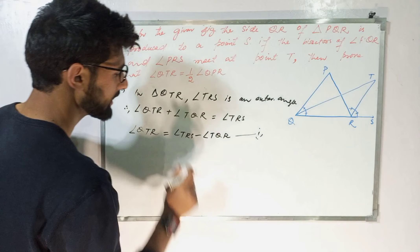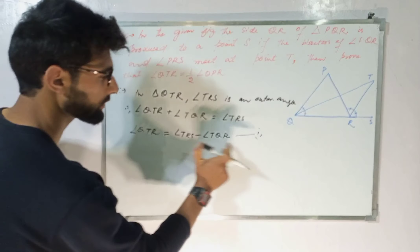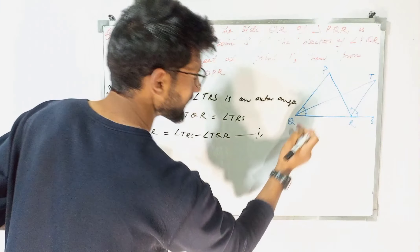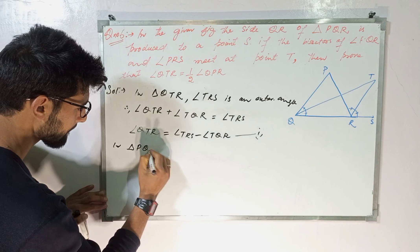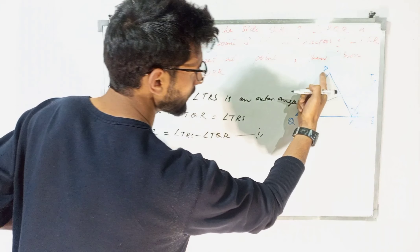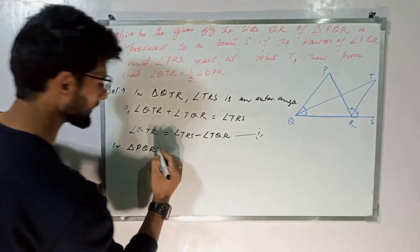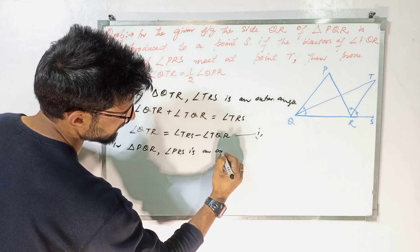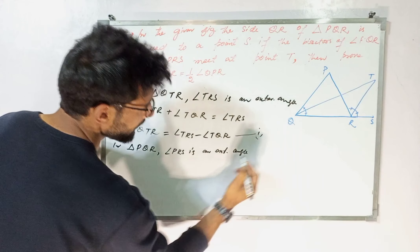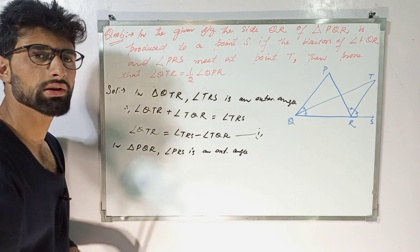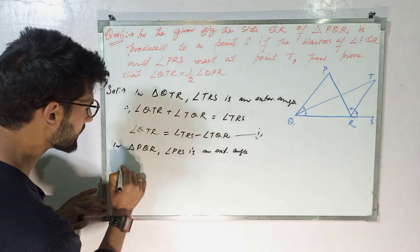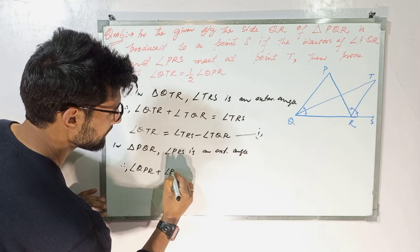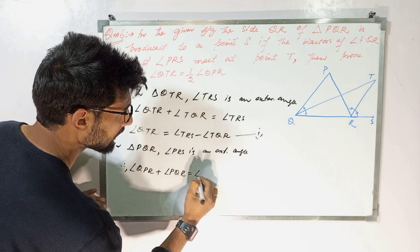From this, angle QTR equals angle TRS minus angle TQR — call this equation one. Now in triangle PQR, angle PRS is an exterior angle, so by the same exterior angle theorem: angle QPR plus angle PQR equals angle PRS — call this equation two.